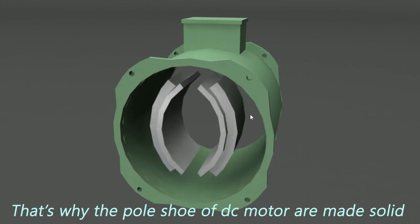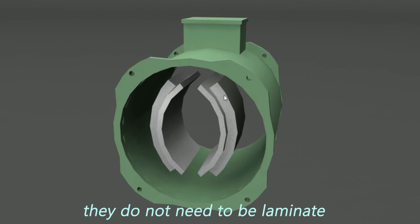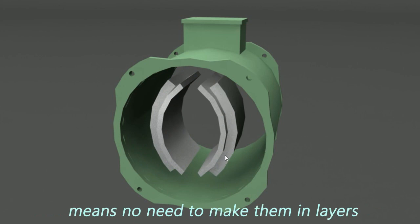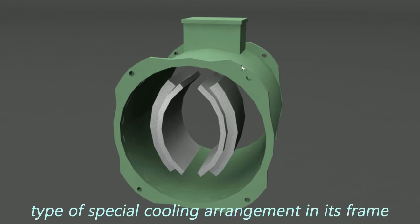That's why the pole shoe of DC motor are made solid. They do not need to be laminate. Means no need to make them in layers. And there is no need to do this type of special cooling arrangement in its frame.